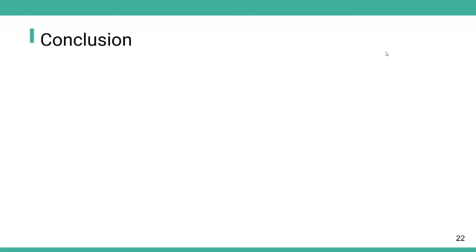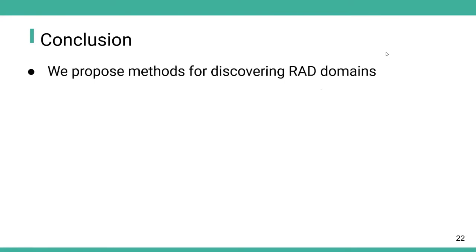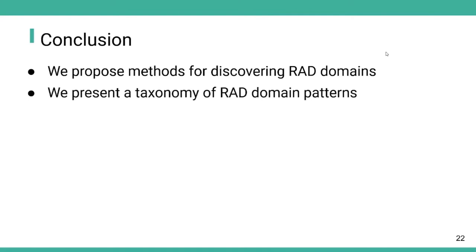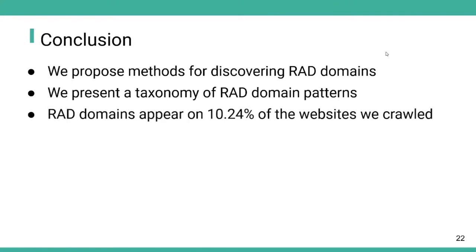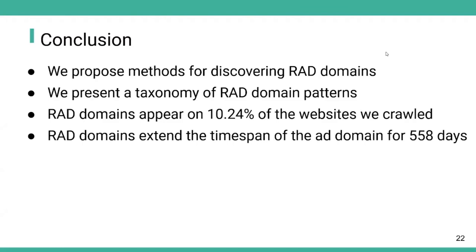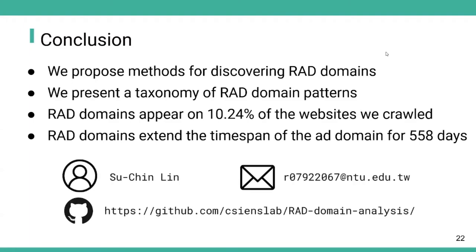In conclusion, we propose methods for discovering red domains using DNS records and TLS certificates, URLs and server files to infer ownership and functionality. We present a taxonomy of red domain patterns consisting of using CDN domains, changing subdomains, moving to first-party, and using revolving domains. Red domains appear on 10.24% of the websites we crawled, implying they are prevalent. Red domains extend the time span of ad domains by 558 days, showing that domain-changing is an effective approach to circumvent ad blockers. Our dataset will be published to help future researchers and the filter list community.